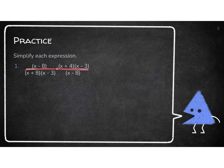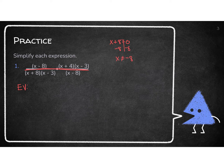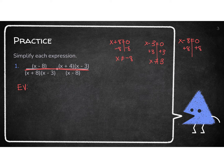Looking for excluded values — I'm looking for what the denominator cannot be. I'll do some side work here. X plus 8 equals 0, solving for X: X cannot equal negative 8. X minus 3 equals 0: X cannot be 3. And X minus 8 equals 0: X cannot be positive 8. So my excluded values are X cannot equal negative 8, 3, or positive 8.